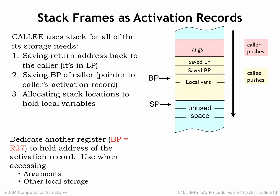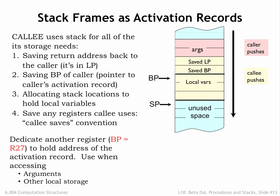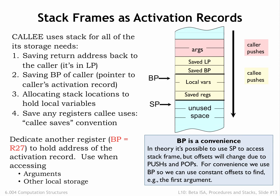Now the code will allocate words in the stack frame to hold the values for the callee's local variables, if any. Finally, the callee needs to save the values of any registers it will use when executing the rest of its code. These saved values can be used to restore the register values just before returning to the caller. This is called the Callee Saves convention, where the callee guarantees that all register values will be preserved across the procedure call. With this convention, the code in the caller can assume any values it placed in registers before a nested procedure call will still be there when the nested call returns.